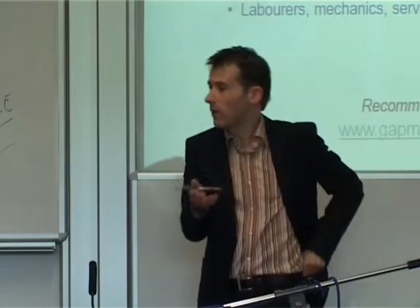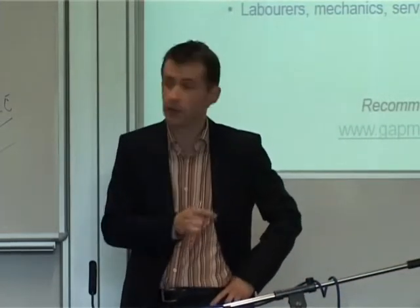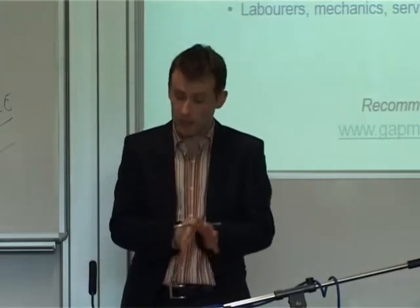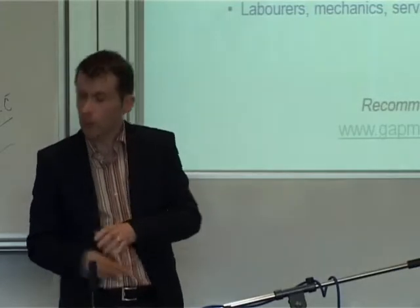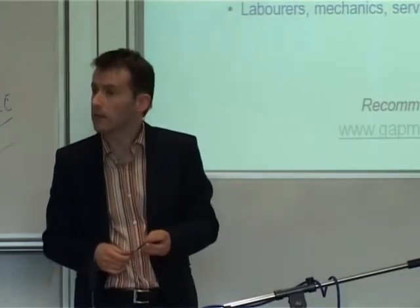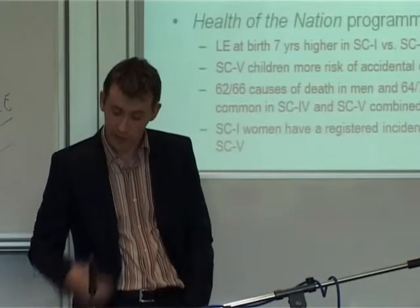In contemporary terms we like to consider ourselves far more sophisticated in how we understand and quantify these concepts. For example, we can control for infant mortality — it's not that the gentry on average died at 35, it's that the arithmetic average lifespan was 35 years when you included all the infants who died in early life. We now have more sophisticated ways and means, and there are web resources with very neat statistical models of these factors using contemporary information.